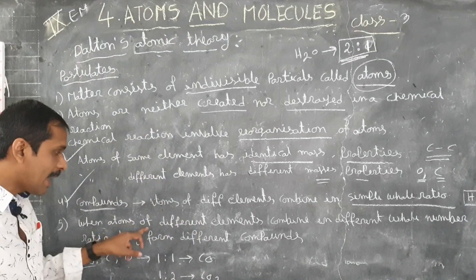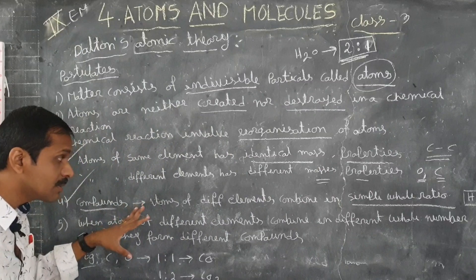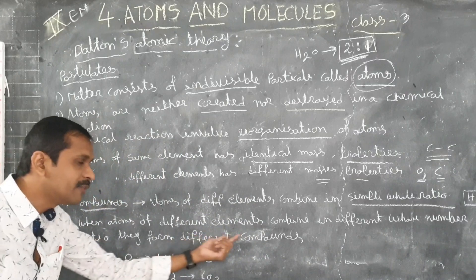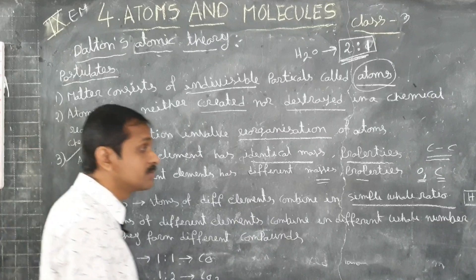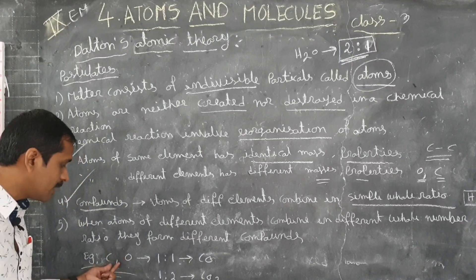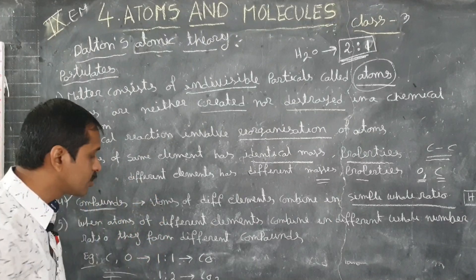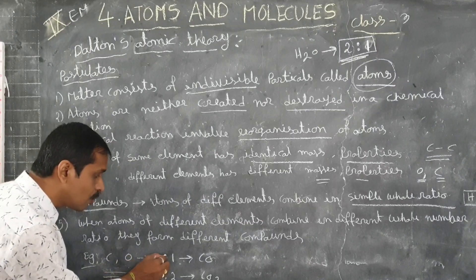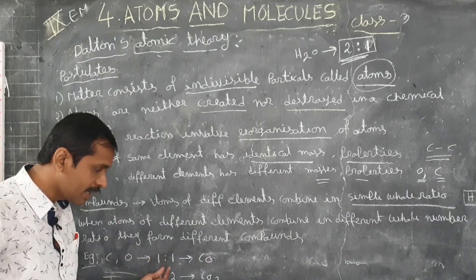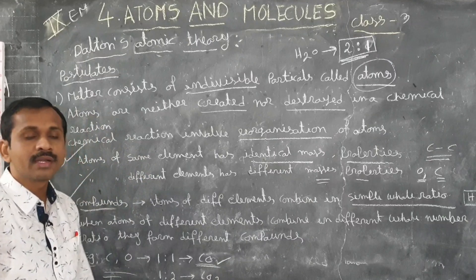The fifth point of Dalton's Atomic Theory: when atoms of different elements combine in different whole number ratios, they form different compounds. For example, take carbon and oxygen. If carbon and oxygen are combined in a 1:1 ratio — one carbon atom and one oxygen atom — the compound formed is carbon monoxide, CO.